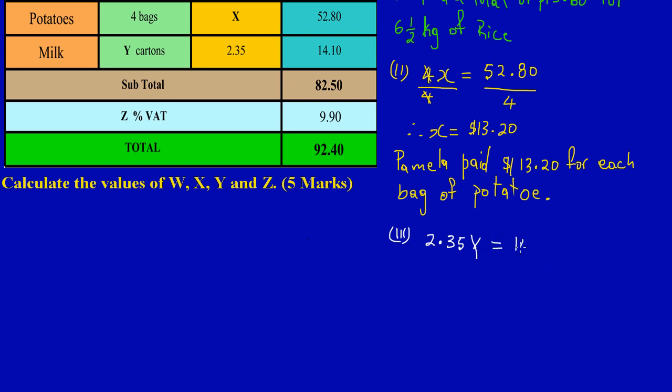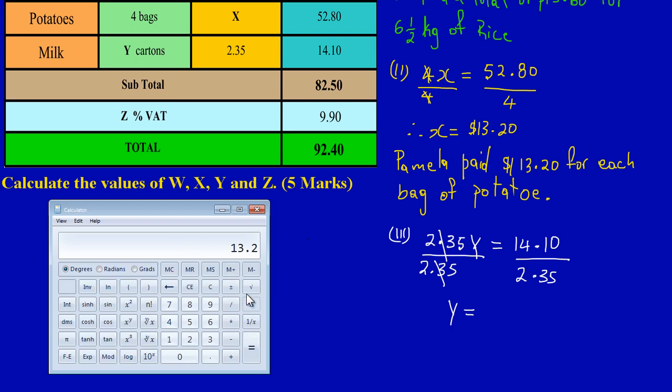When you look at this, $2.35 is multiplying Y, so it simply means I must divide through by $2.35. What I do to one side, I must do to the other side. That will cancel, so I'm left with Y is equal to... we can always bring up our calculators to work this out. So I'm saying $14.10 divided by $2.35, and that gives us a total of $6.